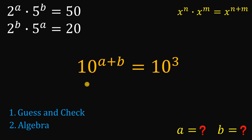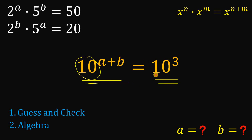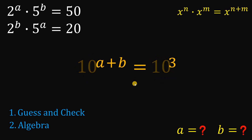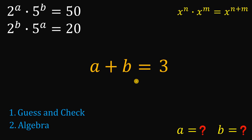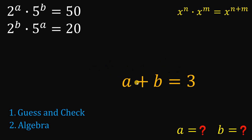Now we have two equal expressions with equal bases. Therefore, their exponents must be the same, so we can say that a plus b equals 3. That's the first equation we get.